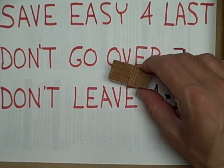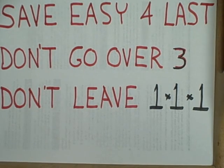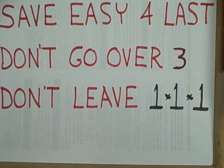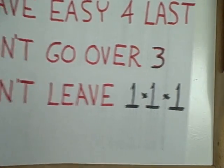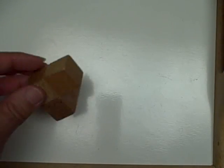Another thing is since the smallest piece has two blocks in it, if ever we only leave a space that is one by one by one in any part of the cube, we know that there is no piece that can fit in that particular part. So using these three rules, I will now attempt to assemble the Soma Cube, and perhaps I will end up assembling it in a way that I've never done so before.